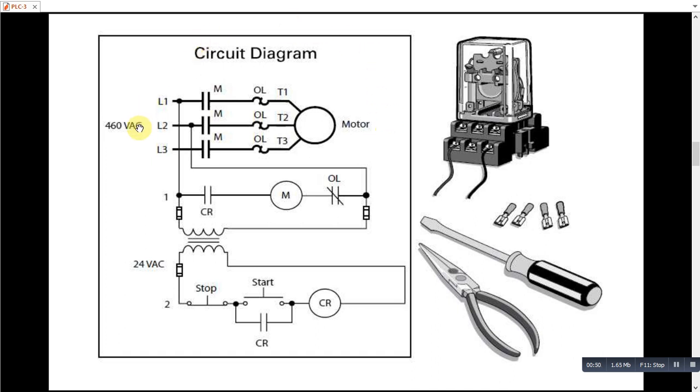Here we have a power circuit, L1, L2, L3, the line voltages, AC voltages and this is the main contactor. And then comes the overload relay and the motor terminals T1, T2, T3. So when this contactor gets energized, power will flow to operate motor.